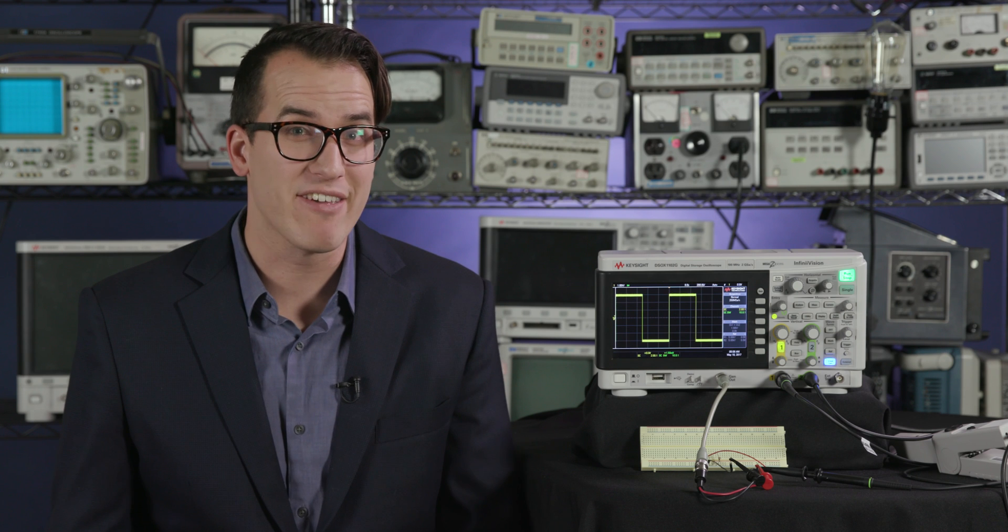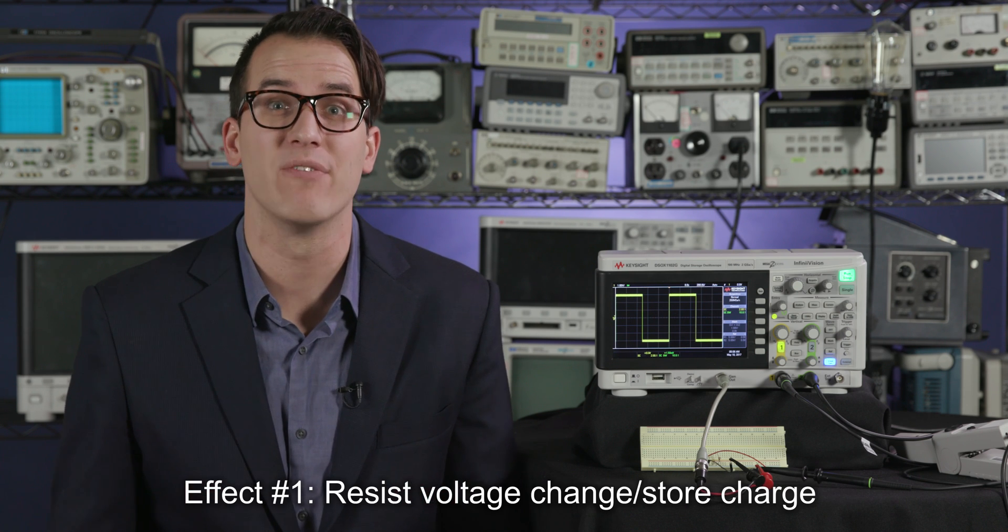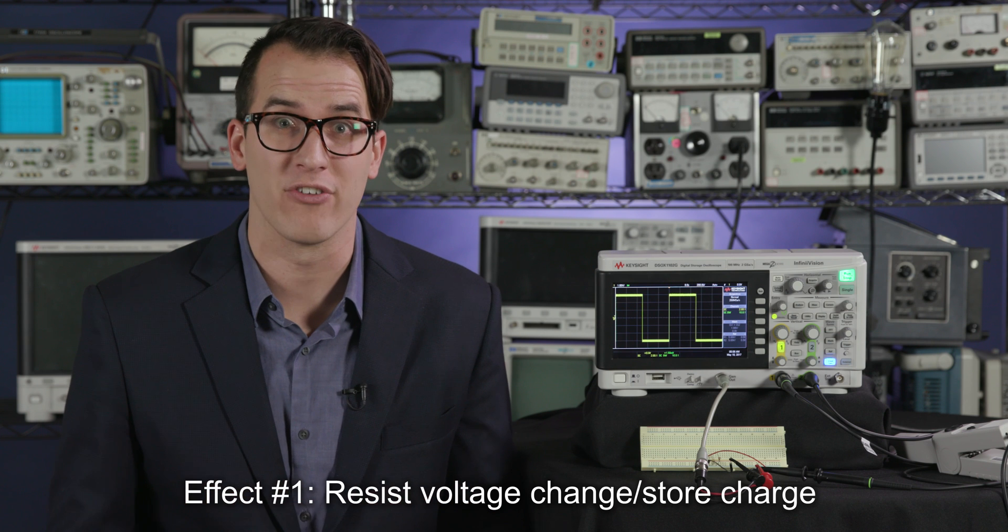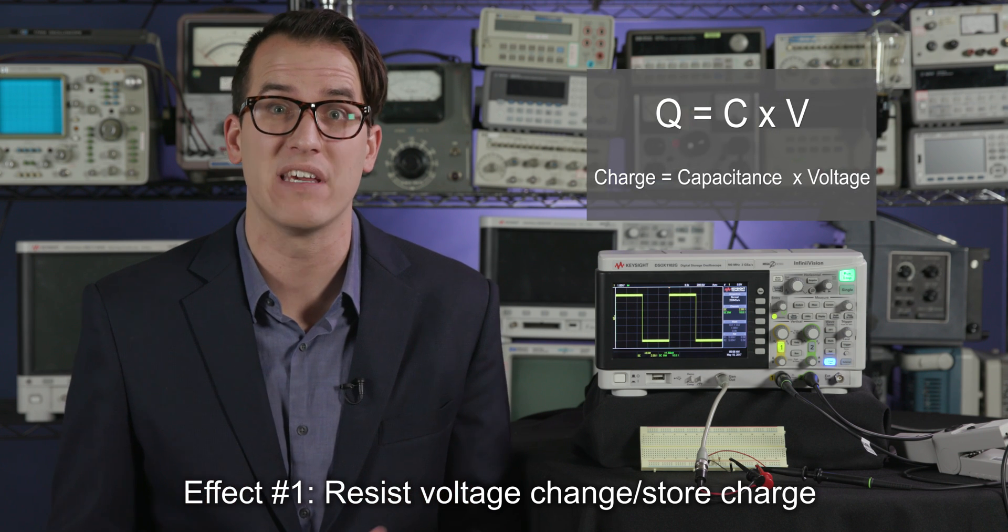The first effect that capacitance has on a system is it's going to resist a change in voltage and store charge according to the formula q equals c times v.